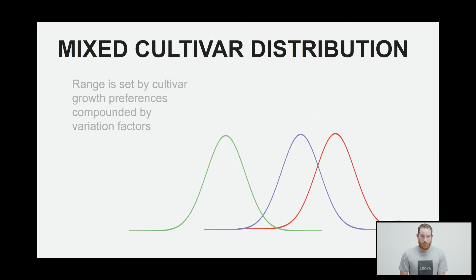Things get a little bit more complicated when mixed cultivars are run in a room. So anytime that more than one strain is on the same irrigation, same environment, same harvesting timeline, then those plants may or may not be running to the optimum, depending on how closely they grow to the plants, the other strain type in that room. So in this case, the range is set by the growth preferences of those plants, and that can be a variation factor.